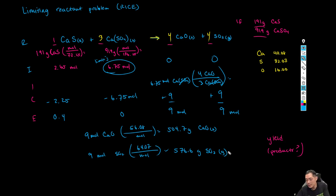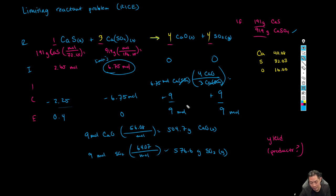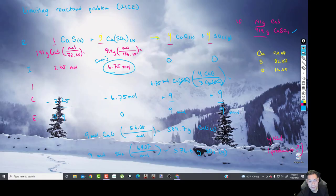This is a RICE problem. The main thing is figuring out which reactant is limiting — in this case CaSO₄, because we needed a 1-to-3 ratio. With 2.65 moles of CaS, we would need at least 7.95 moles of CaSO₄, but we only had 6.75, making it the limiting reagent. We base all changes on that limiting amount, dividing by three and multiplying by four-thirds to get the final answers. It's complicated at first, but once you get the hang of it, it's fairly straightforward — just unit conversions.